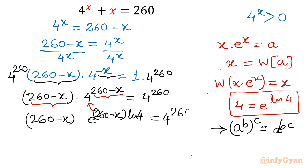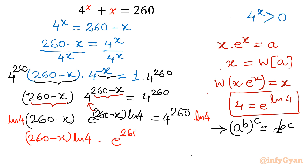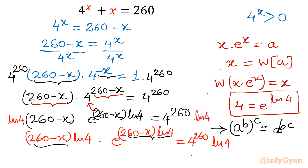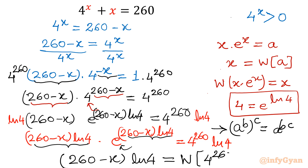We have e raised to the power ln4, giving 4 to the power 260. Now ln4 is missing, so I will multiply both sides by ln4. The equation will be written as: (260 minus x) times ln4, times e raised to the power (260 minus x) times ln4, times e raised to the power ln4, equal to 4 to the power 260. Now applying the Lambert W formula, we get: (260 minus x) times ln4 equals Lambert W of (4 to the power 260 times ln4).